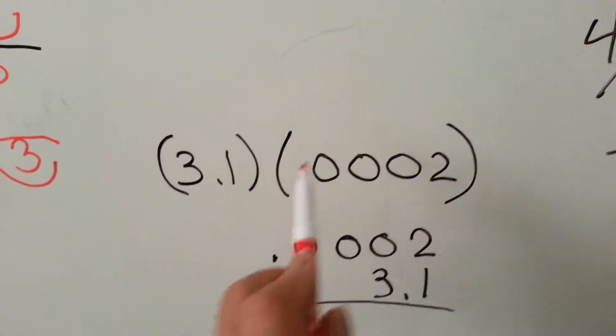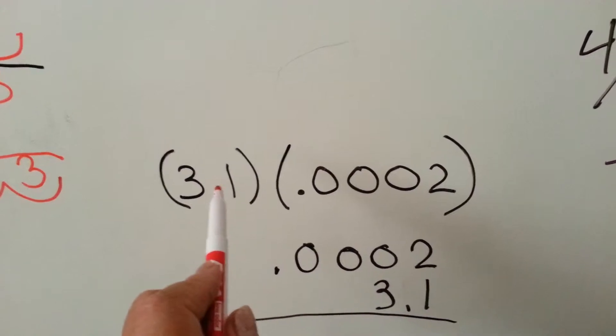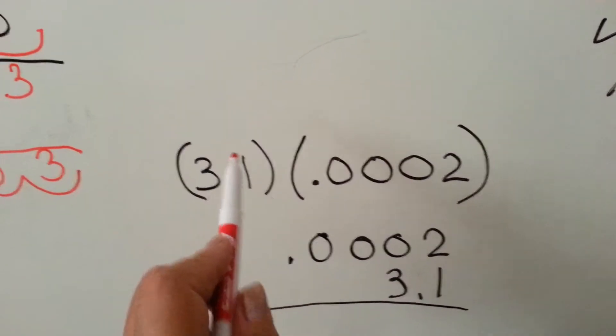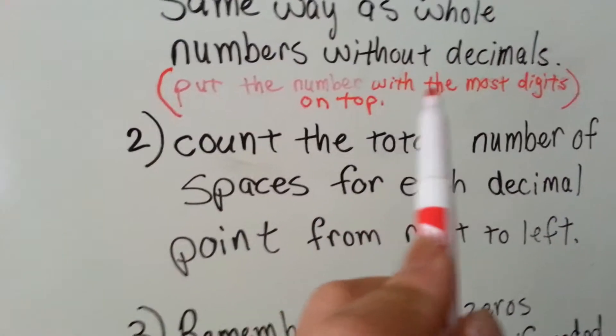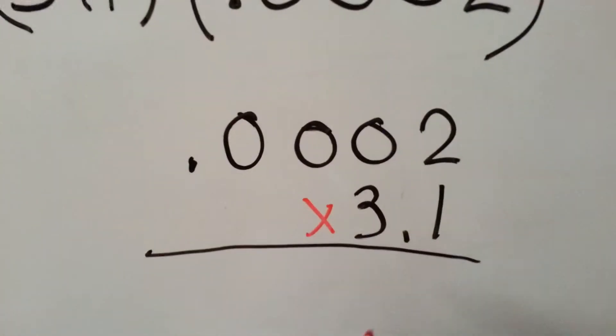Look at this one. The second number is way longer and larger than the first one. So what we do is we put the number with the most digits on top. So I put this one on top and this one on the bottom. And now we're going to multiply.